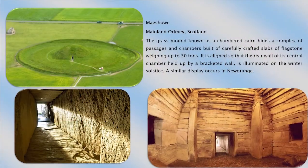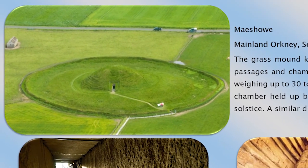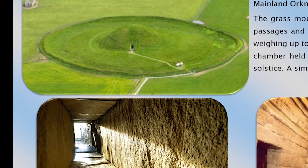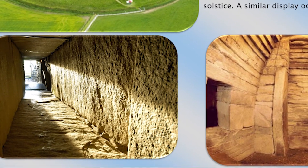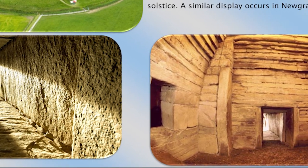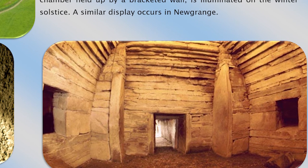This is another big clock that ancient Europeans used to keep time and track the seasons. It's similar to the next site, Maeshowe in mainland Orkney, Scotland. The grass mound, known as a chambered cairn, hides a complex of passages and chambers built of carefully crafted slabs of flagstone weighing up to 30 tons. It is aligned so that the rear wall of its central chamber is illuminated on the winter solstice — a similar display to Newgrange. People still wonder how these ancient peoples lifted such enormous stones.